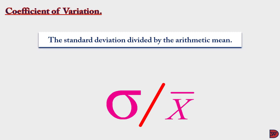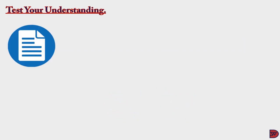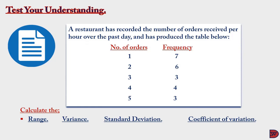The higher the coefficient of variation, the higher the dispersion of values around the mean, and vice versa. Let's test our understanding. A restaurant has recorded the number of orders received per hour over the past day. It received 1 order for 7 hours, 2 orders for 6 hours, 3 orders for 3 hours, and 4 orders for 3 hours. We have to calculate the range, variance, standard deviation, and coefficient of variation.